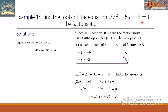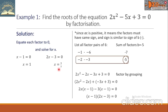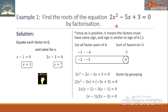We equate each factor to zero and solve for x. From x - 1 = 0, we get x = 1. From 2x - 3 = 0, we transpose -3 to the right and divide by 2, giving x = 3/2. These are the roots or solutions. To verify, substitute these values into the original equation and confirm both are satisfied.